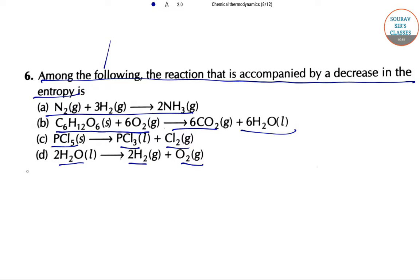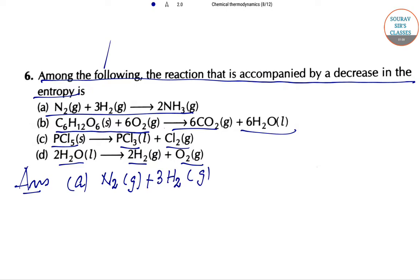The answer is A. The reaction N2 gas plus 3H2 gas forming ammonia will be accompanied by a decrease in entropy.